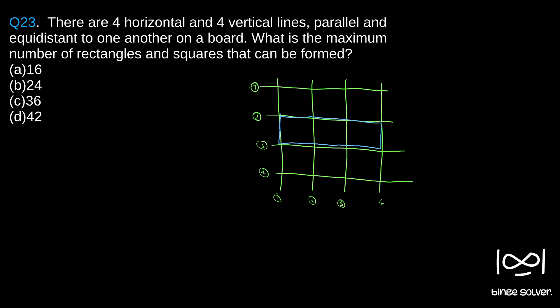To get this rectangle, we choose two, three as our horizontal lines and one, four as our vertical lines. Then we get this rectangle. So the question is asking how many ways we can choose two vertical lines and two horizontal lines.